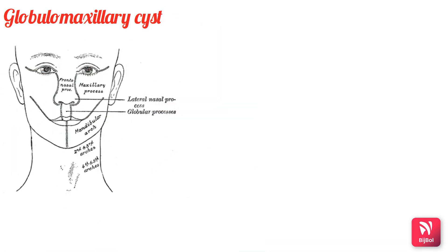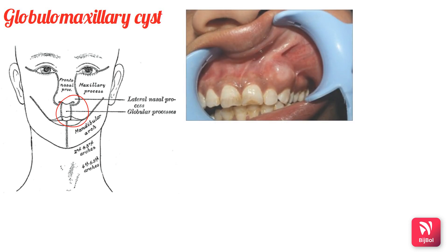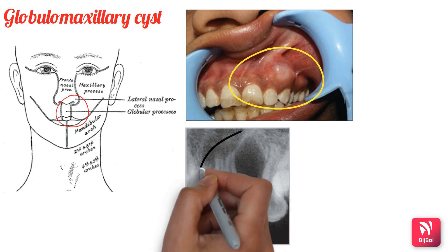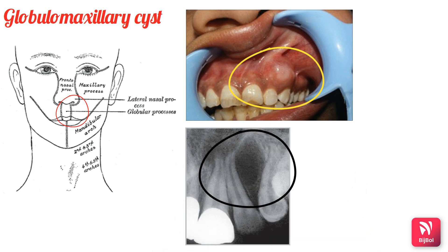The globulomaxillary cyst is thought to arise at the junction of the globular process of the median nasal process and the maxillary process. Usually it is asymptomatic and is present between the maxillary lateral incisor and canine teeth. Radiographically, it characteristically shows an inverted pear-shaped radiolucency between the roots of the lateral incisor and canine, causing divergence of the roots of these teeth — which remain vital. The cyst is lined by stratified squamous epithelium.